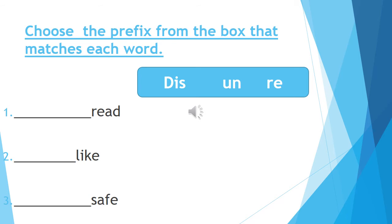Choose the prefix from the box that matches each word. In the box we have three prefixes: dis, un, and re. We have three words. Number one, the word is 'read'. Which prefix can you add to the word 'read' to make a new word? Number two, the word is 'like'. Which prefix can you add to the word 'like' to make a new word or to change its meaning?